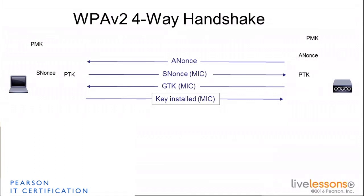The client simply returns the fourth packet telling the AP: all good, I got the group key, I got it installed, and I validated that you have the PMK — we're good. From that point on, they can use the PTK to generate encrypted traffic. And of course, the GTK can be used to send broadcast traffic to everyone, including that client.